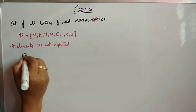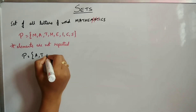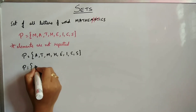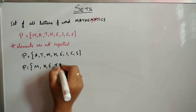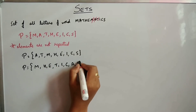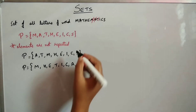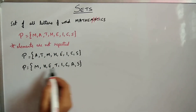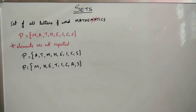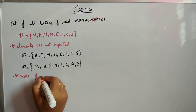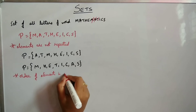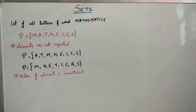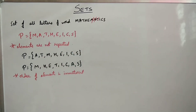This set can also be written as A, T, M, H, E, I, C, S, or as M, H, E, T, I, C, A, S — all of these contain the same letters of the word 'mathematics', only the order is different. So in a set, the order of elements is immaterial; you can write them in any order. Elements are not repeated and order is immaterial.